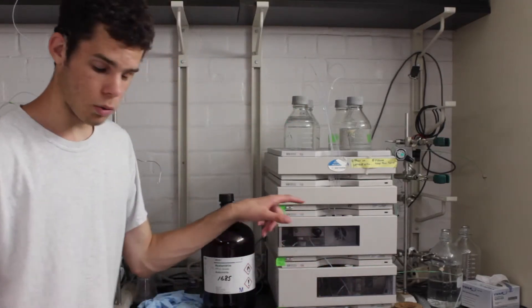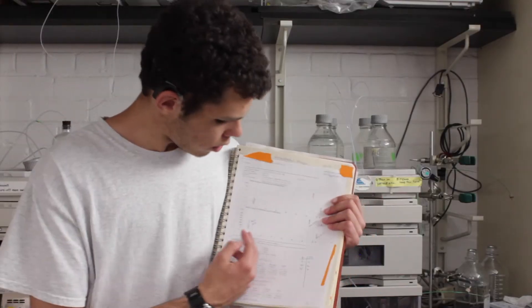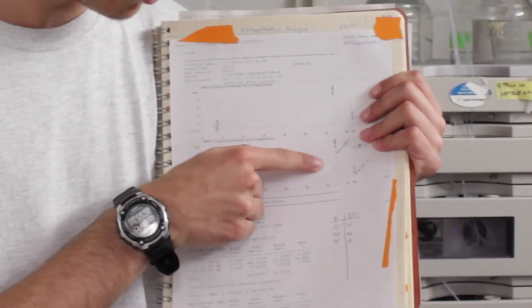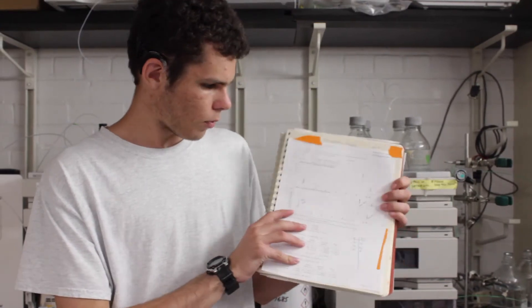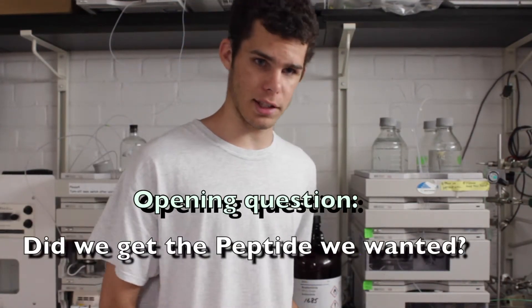Once you get your compound detected and you figure out what you have, then you get a monitor on this computer. Once you look at the monitor, this is what you'll get. What you're looking for is a specific peak here that will tell you how pure it is. The goal here is you want to make it as pure as possible. Basically what we're trying to answer from this machine is, did we get the peptide that we were trying to make?